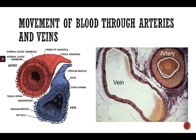Moving on to the movement of blood through the arteries and veins — carrying blood around the body is really important. Arteries, veins, and capillaries play an important role in carrying blood from the heart and to the heart. The arteries are the blood vessels that carry oxygenated blood away from the heart, while veins, on the other hand, carry blood back to the heart.